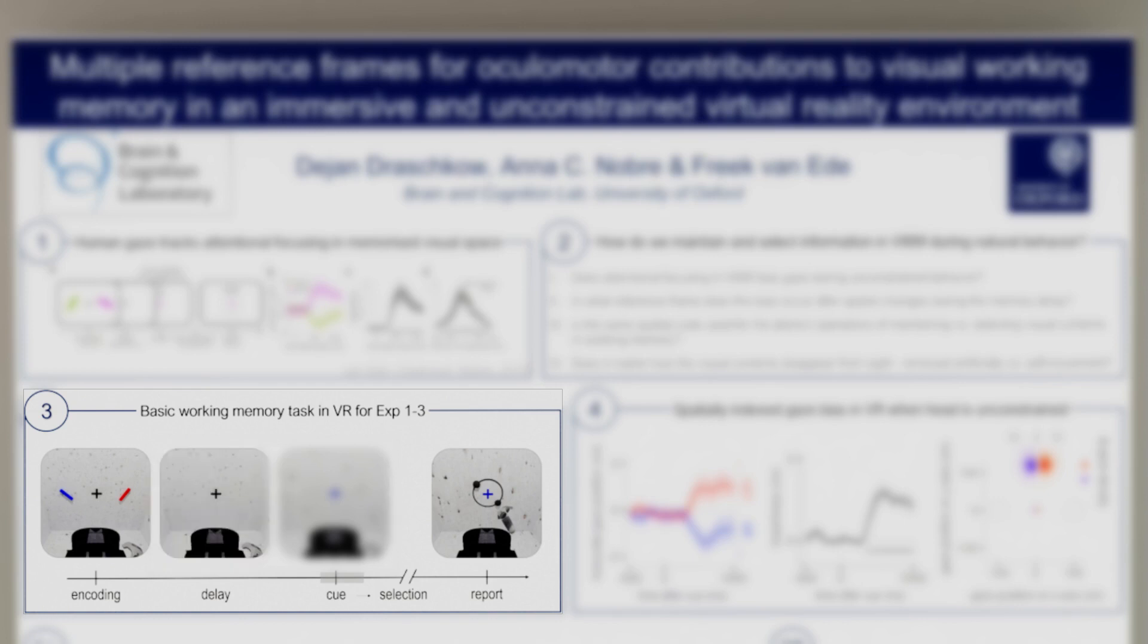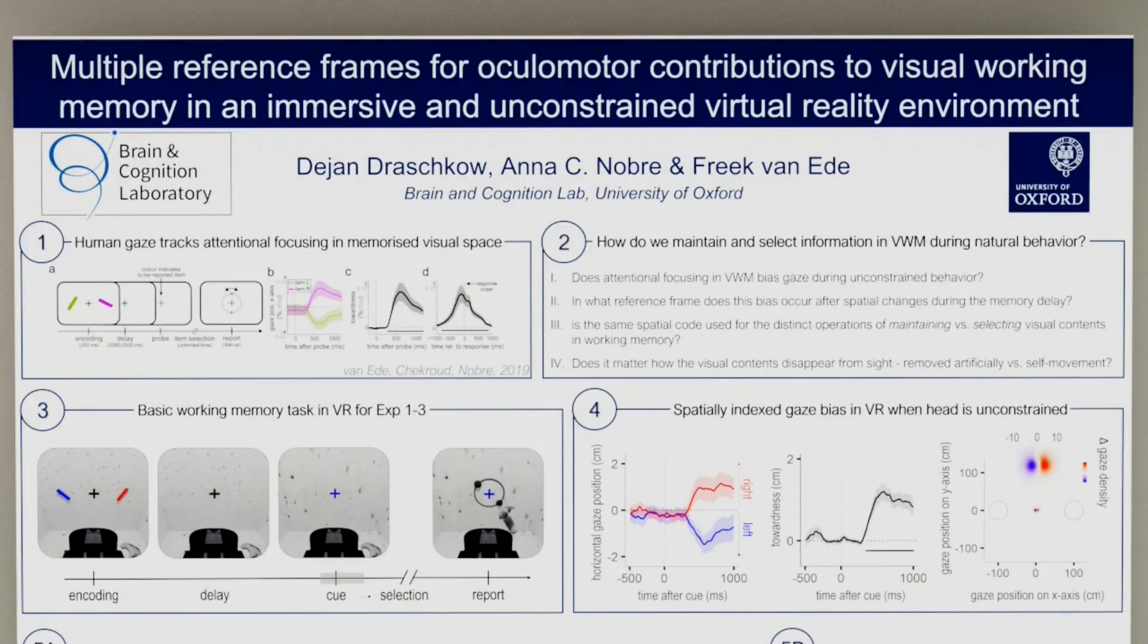To cue which bar or item to report, the color of the central fixation cross changed to match that of either bar. Participants used the handheld controller to reproduce the precise orientation on a dial that appeared around fixation.